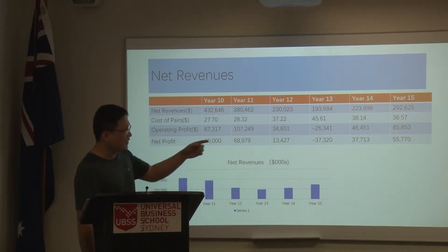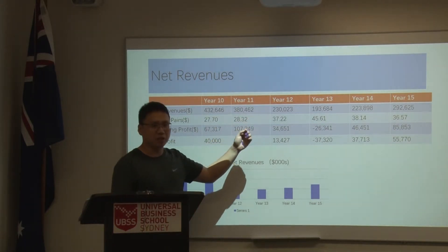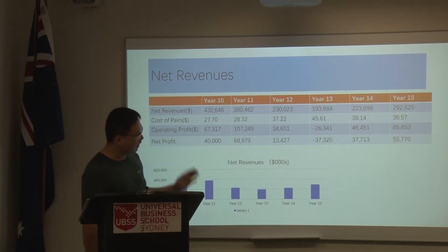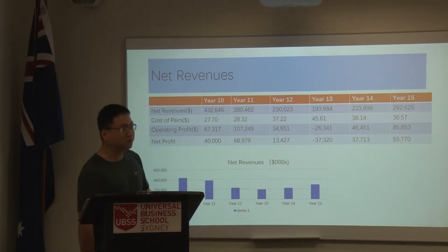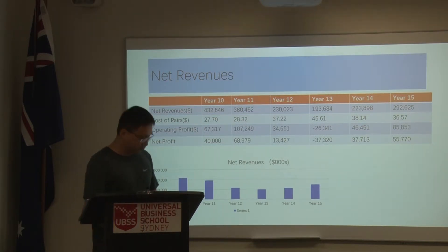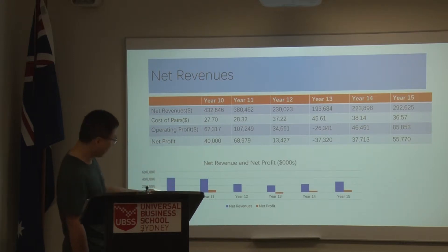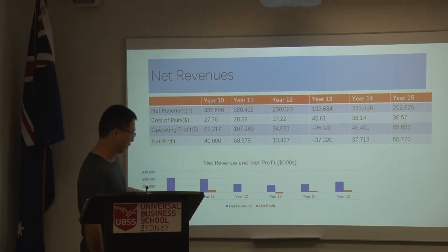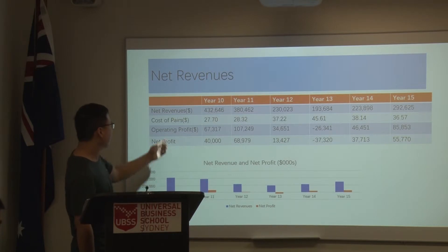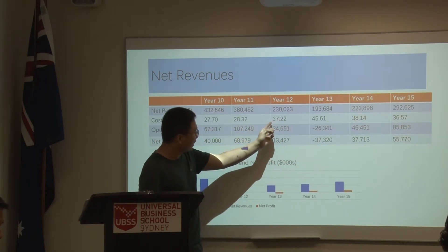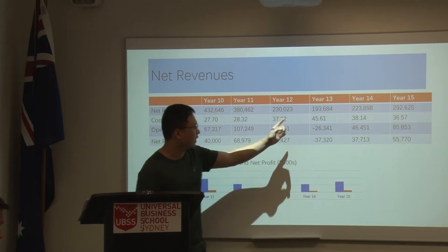We also had a high rejection rate in year 12 — more than 12%. In year 12 and year 13 we also did not use any bank loan to support our company operations. According to this graph, we can see the net revenue and the net profit have a similar trend — decreasing from year 11 to year 13, and increasing from year 14 to year 15. The cost of goods sold in year 12 was 37.22 and year 13 was 45.61.